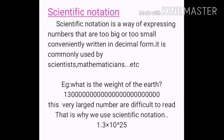Scientific notation is a way of expressing numbers. We know that very large numbers are difficult to read. That is why we use scientific notation. We have a scientific notation formula.